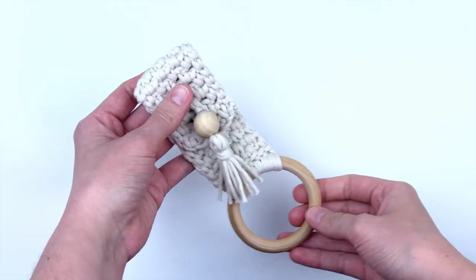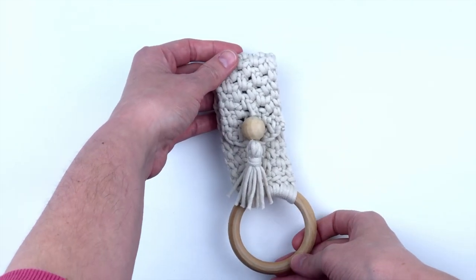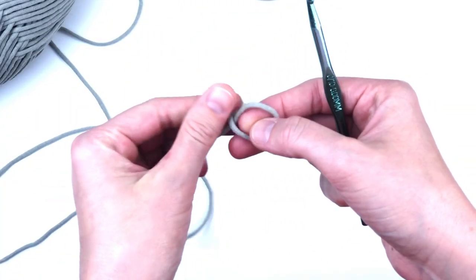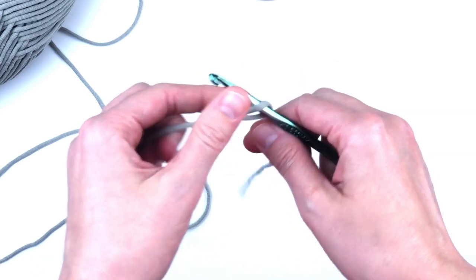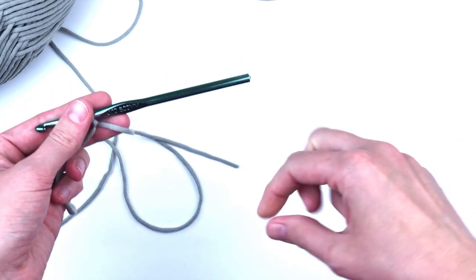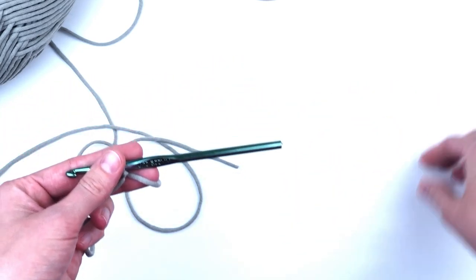For a full list of supplies, see the description box below. We will begin by making a slip knot, leaving a long tail of about 12 inches or so. We will be using this tail later to sew the button down.